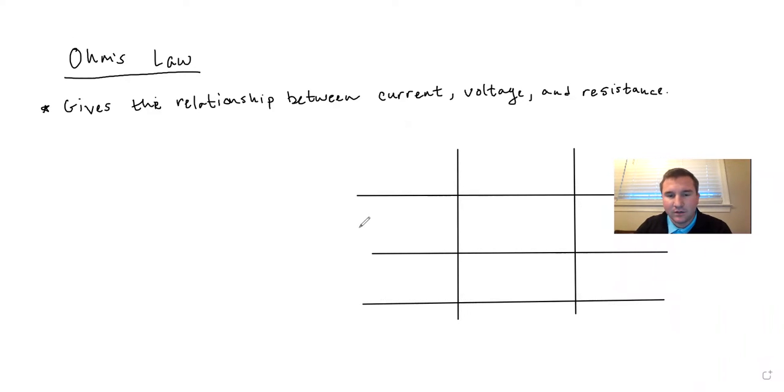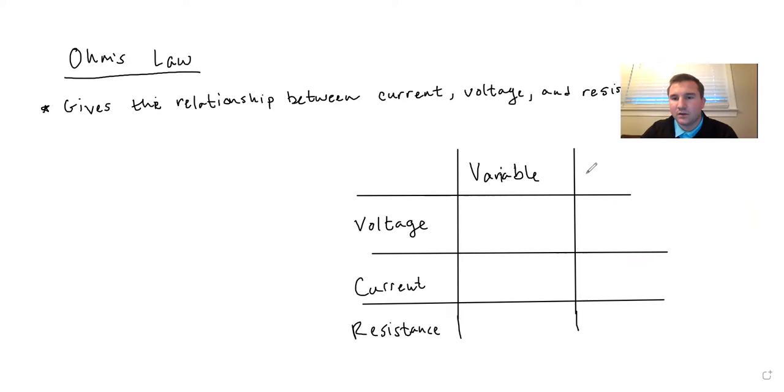So we've got voltage, current, and resistance. And we've got the variable and the unit.